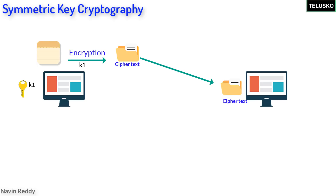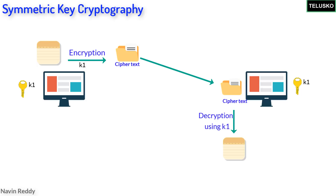Even B cannot read that message because it is in encrypted format, so B has to decrypt it. Now which key will B use? Of course the same key, K1. So A and B both will have the same key, K1. Now the question is: how will they share this key with each other? Of course not on the network. At the end, we want them to both have the same key, K1.